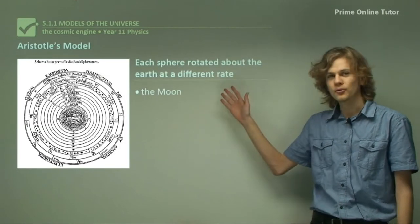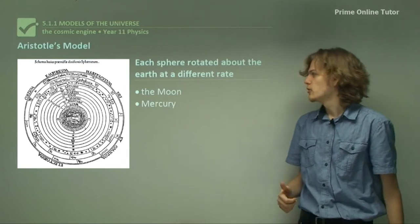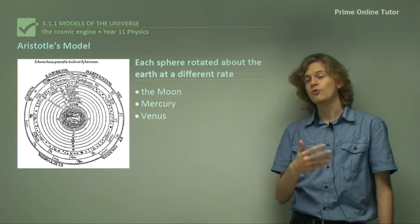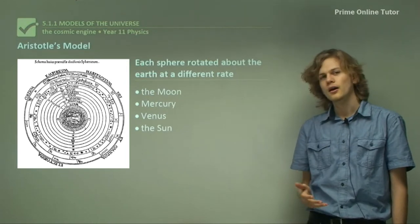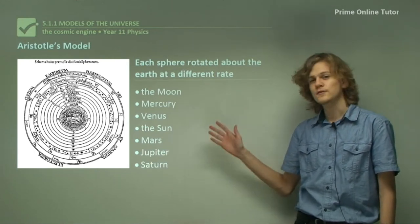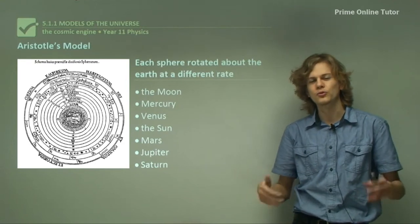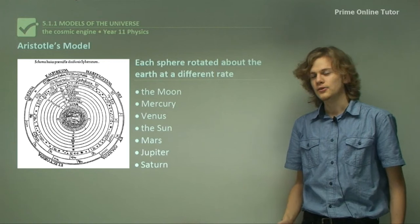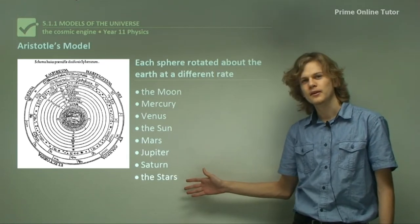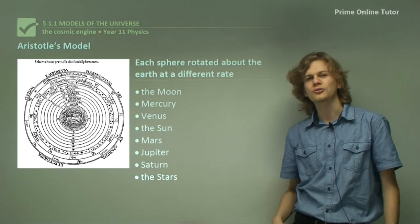Each sphere around the Earth rotated at a different rate. There was a sphere for the Moon, Mercury, Venus, then beyond Venus we had a sphere for the Sun. After that a sphere for Mars, Jupiter, and Saturn. At this point neither Uranus nor Neptune had been discovered. They were too far away and too faint to be seen with the naked eye. Beyond all the spheres of the planets, we had a sphere for the stars. The stars were all embedded in this single sphere which remained all the way at the outer edge.